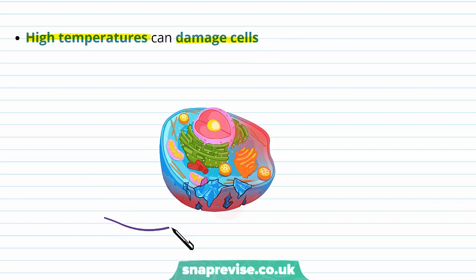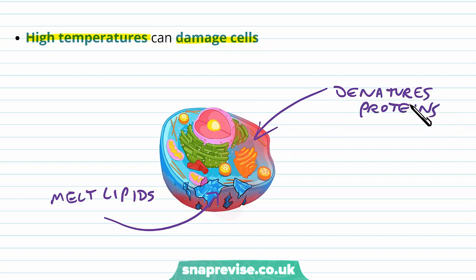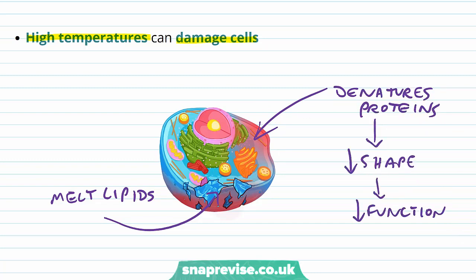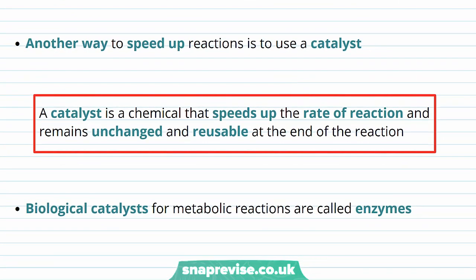First of all, high temperature can melt lipids, and since our membranes are made out of lipids, it would destroy the cell entirely. Secondly, high temperatures denature proteins, which means they lose their shape and can't function properly — we can't send nerve impulses, can't carry out respiration. So we have to find another way to speed up reactions without causing damage, and the way we do this is to use a catalyst.